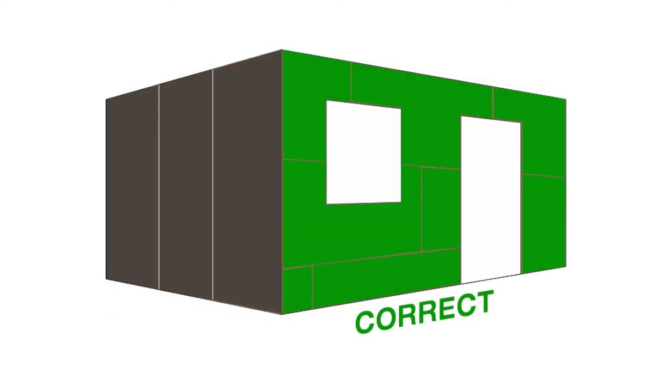This wall has the fibre cement sheet fitted correctly. Notice there are no joins above the window or door corners and the vertical joints are not continuous.